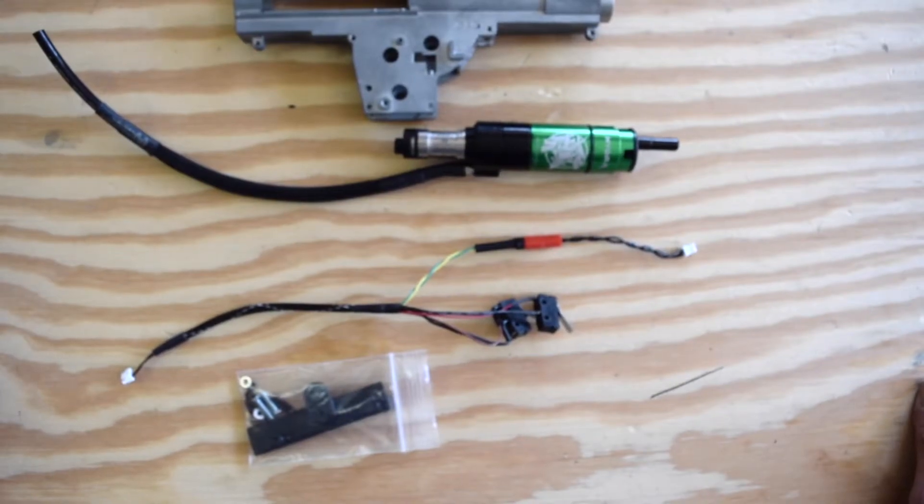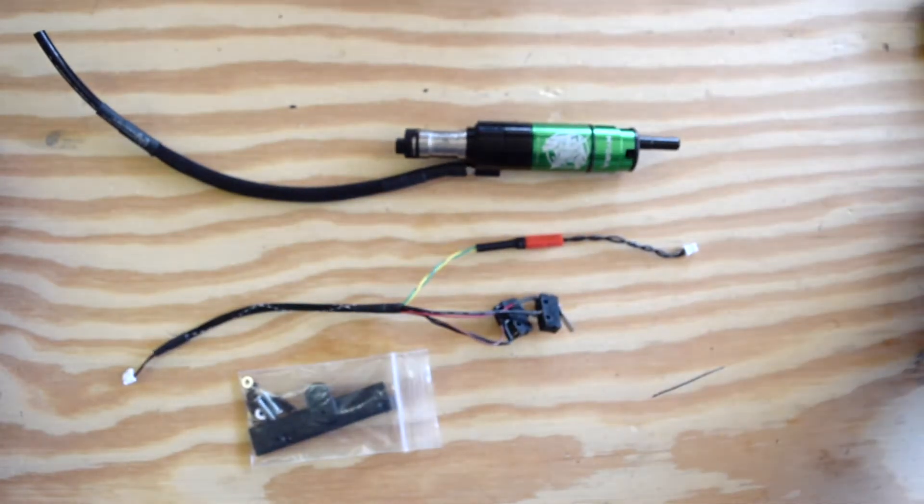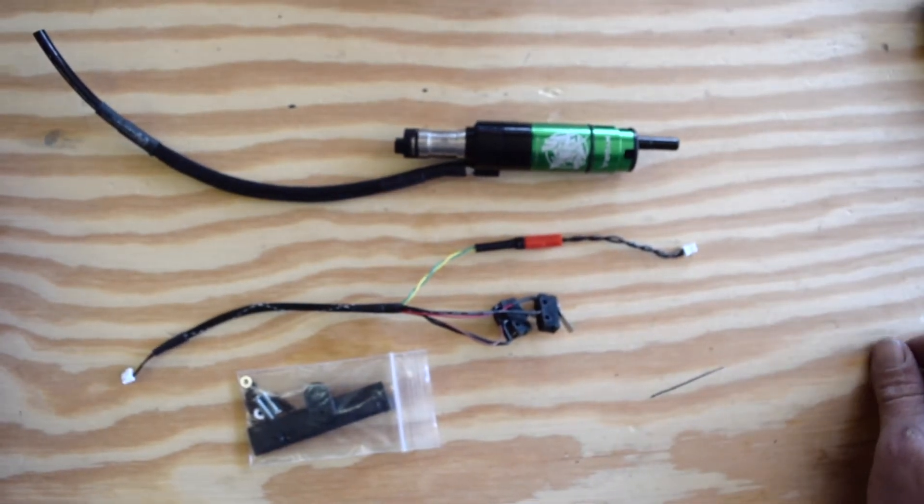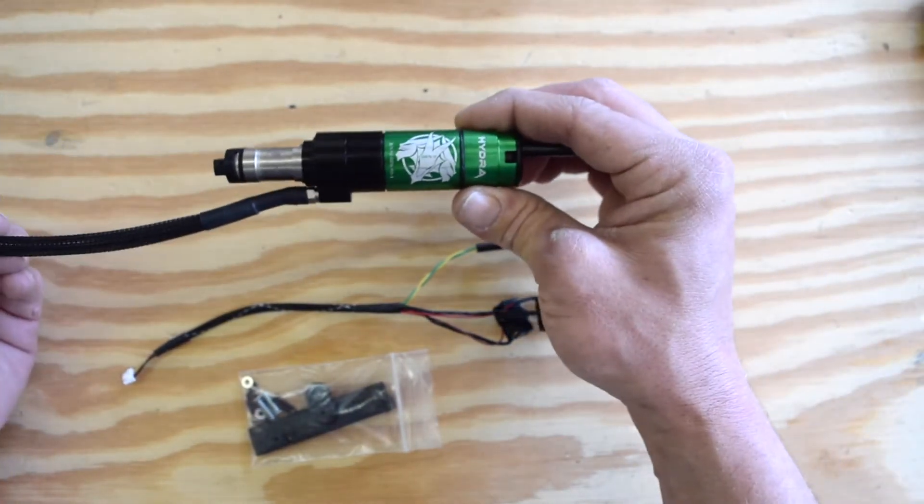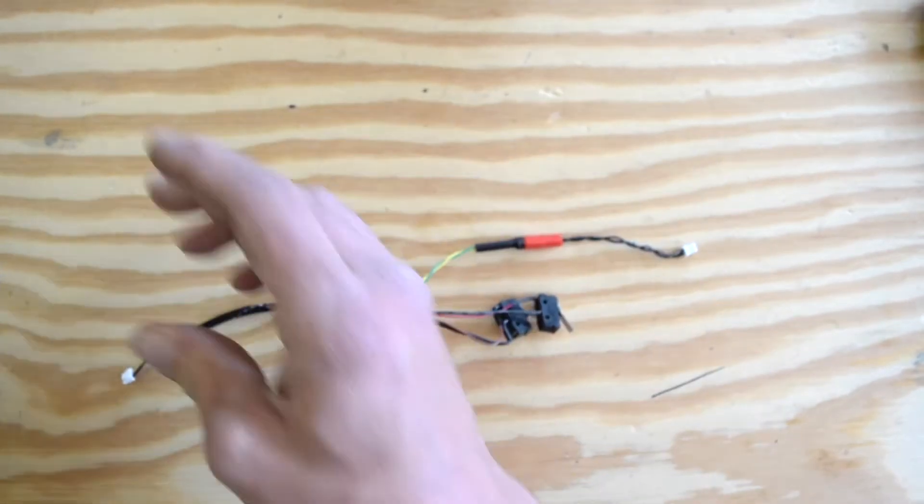So let's take a look at what comes in the Hydra Gen 2 F2000 kit. We can go ahead and set the gearbox to the side, we're not going to need that right this second. You will get the Gen 2 Hydra for the F2000. We'll set this aside as well.